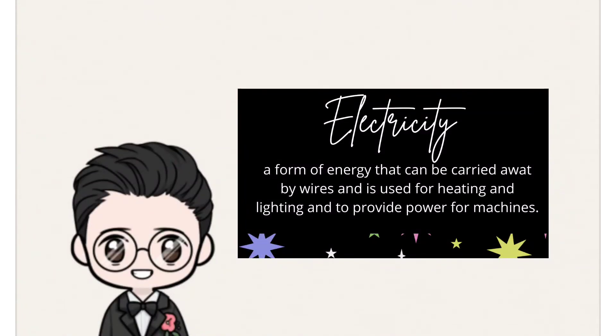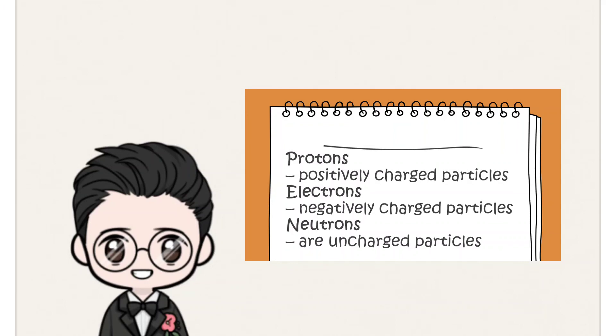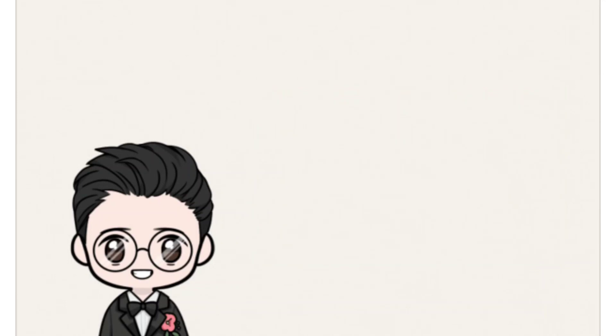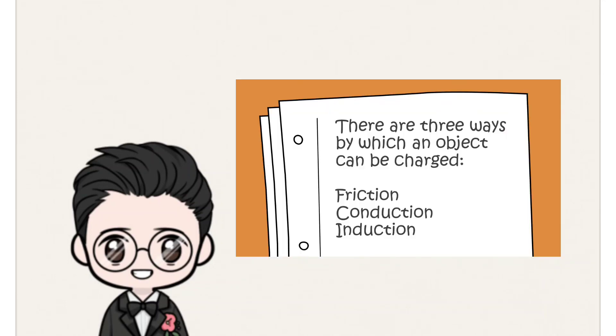As we end, take note that electricity is a form of energy that makes devices and machines run. The two types of electrical charges are positive and negative charges. Particles of the same charges repel each other while particles of unlike charges attract each other. And lastly, an object can be charged by friction, conduction, or induction.